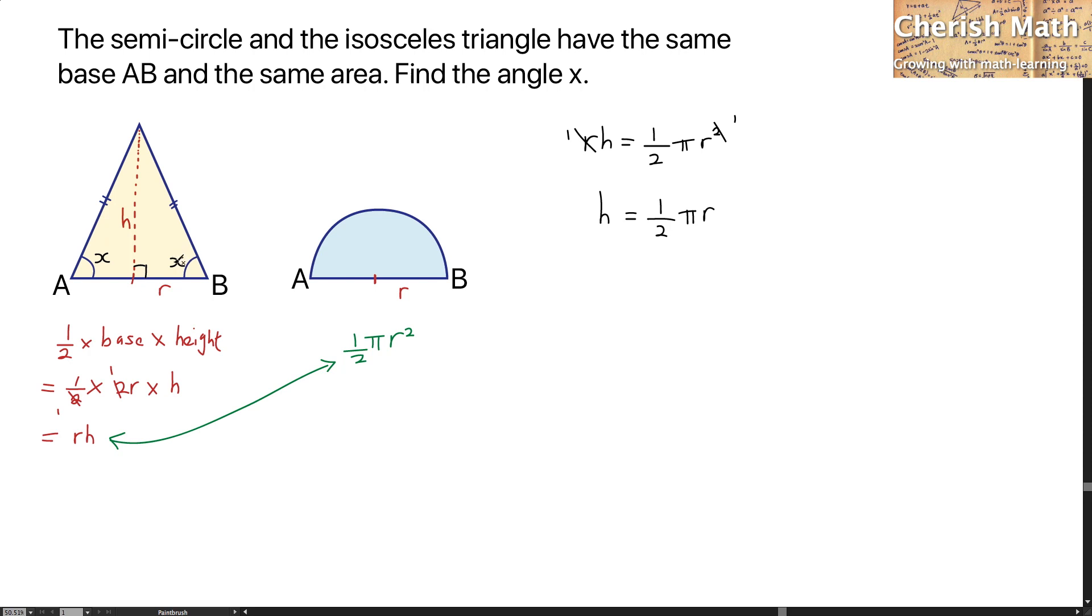The angle X, I can find it by simply using tangent X, and that is equal to H as the opposite, which is the height, divided by the adjacent, which is R.